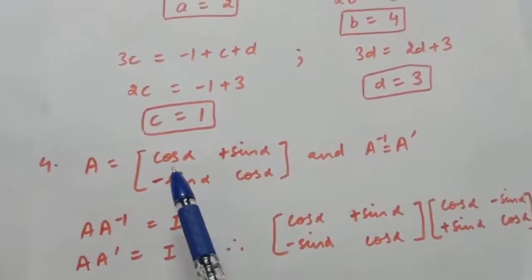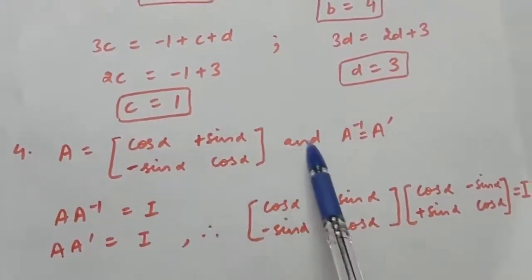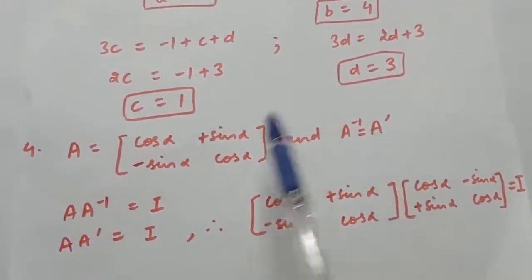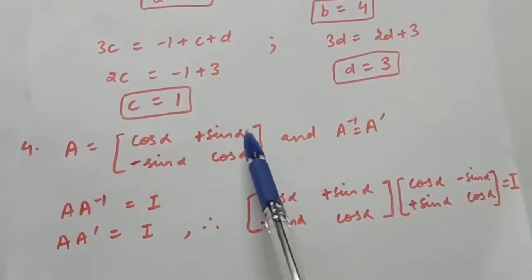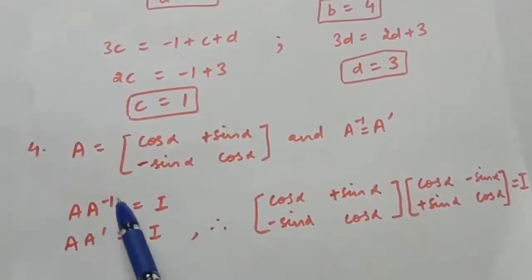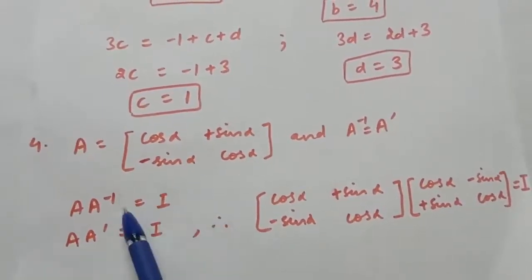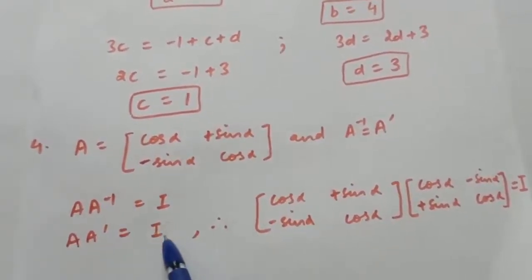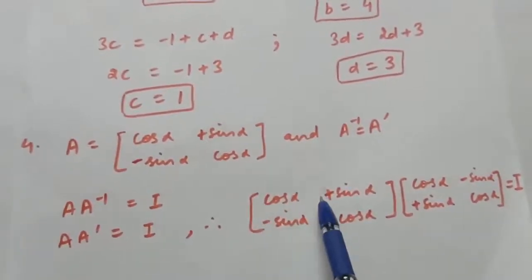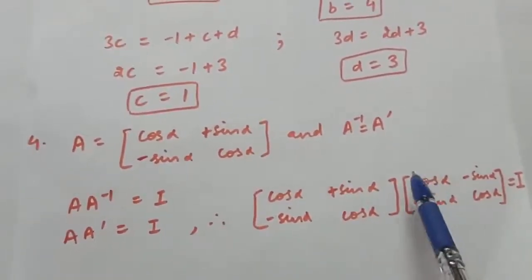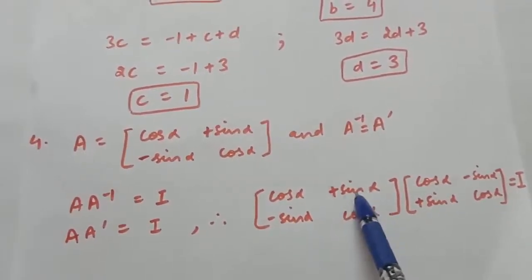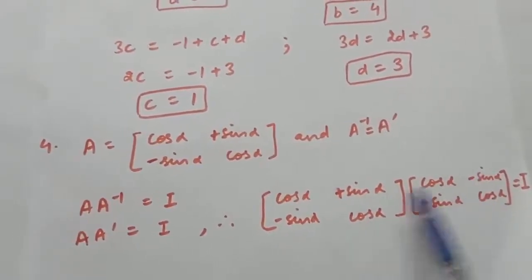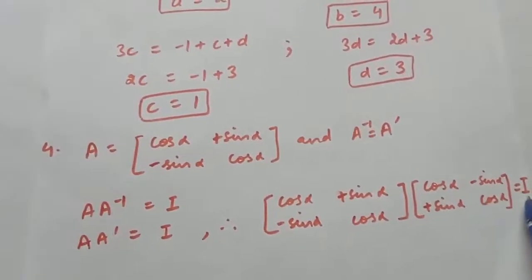Question number 4: matrix A is given, and A inverse equals A transpose. We have to find the value of alpha. We know that A times A inverse is the identity matrix. Since A inverse equals A transpose, A times A transpose equals the identity matrix. A transpose is obtained by changing rows into columns, giving columns [cos α, sin α] and [-sin α, cos α].